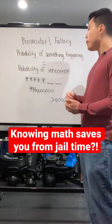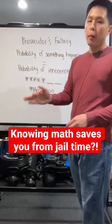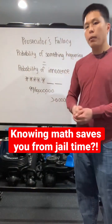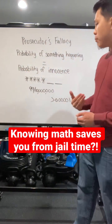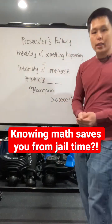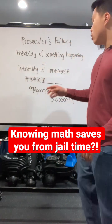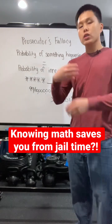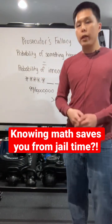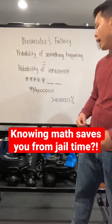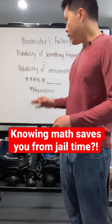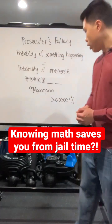The probability of something happening equals the probability of your innocence or guilt. For example, a crime is committed and a license plate is remembered — five digits, two of which we're not sure of. That means there are 100 possible combinations, so 99 out of 10 million is the possibility that it is not your car.